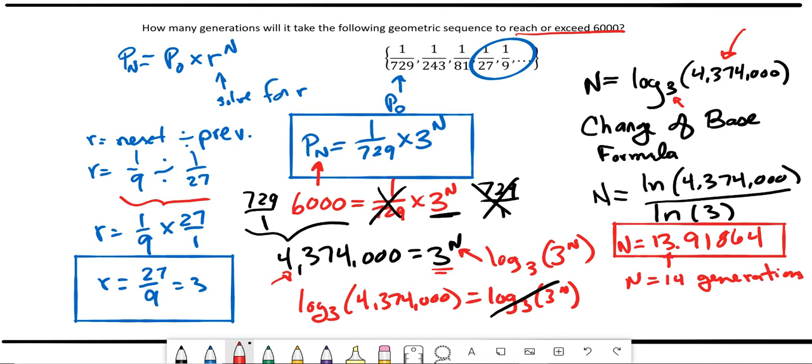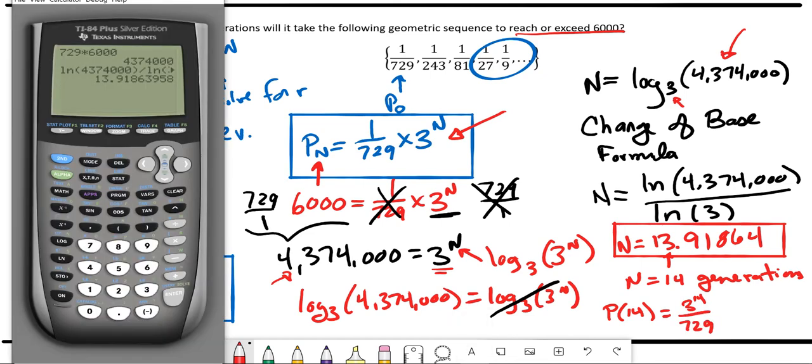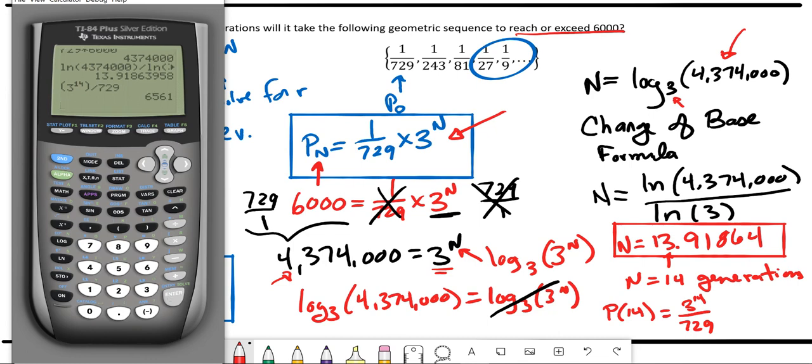So we can plug this back into our model to see that we meet or exceed 6,000. So again, here's our model. If we evaluate p of 14, that would be 3 to the 14th power over 729. We see we get 6561. So we meet or we exceeded 6,000. And in this case, we exceeded.